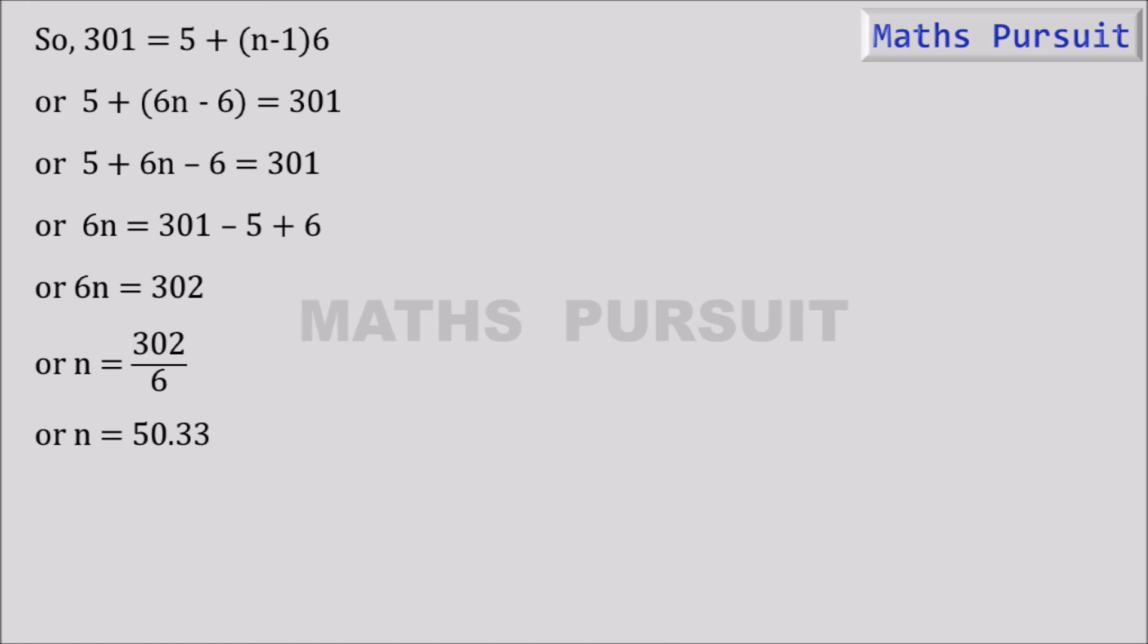So we found that the value of n is equal to 50.33. That means it does not fulfill the condition of a natural number. Therefore as n is not a natural number, hence 301 cannot be a term of the given list of numbers.